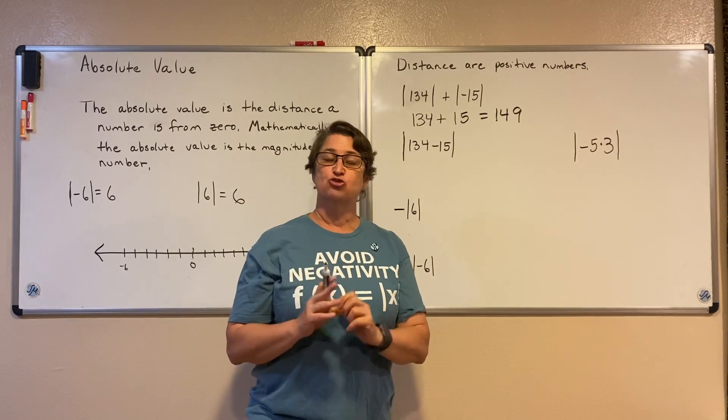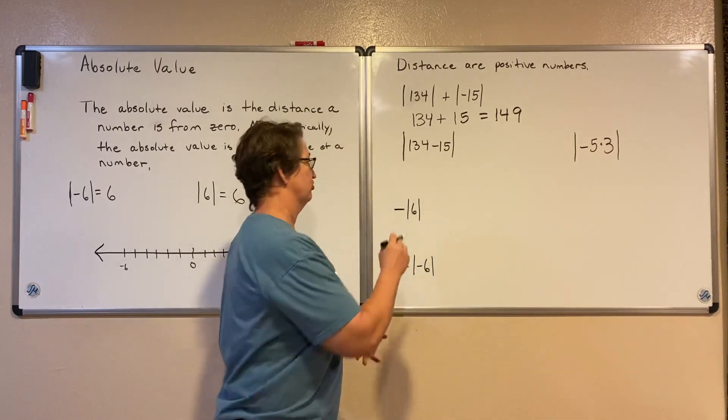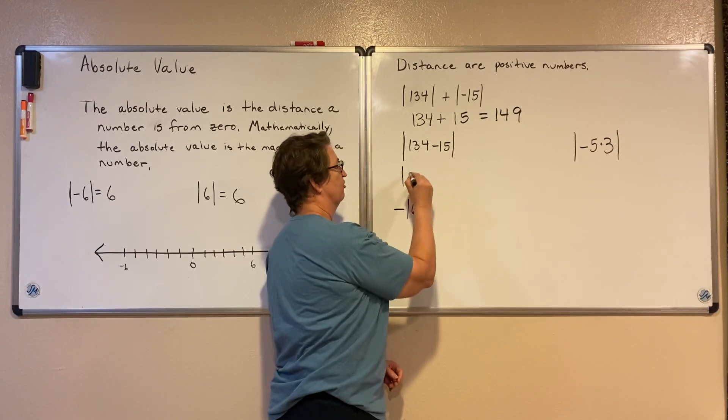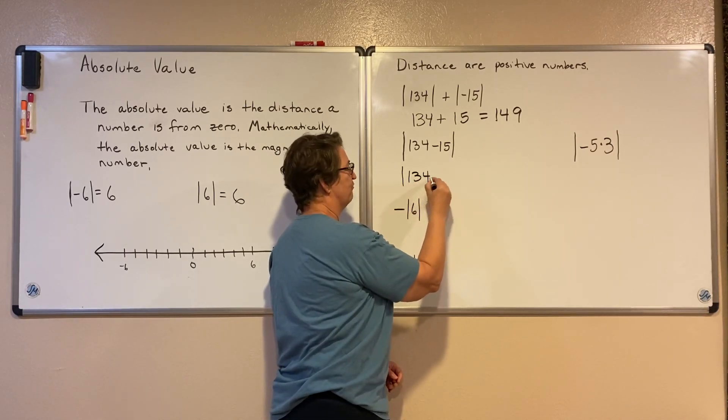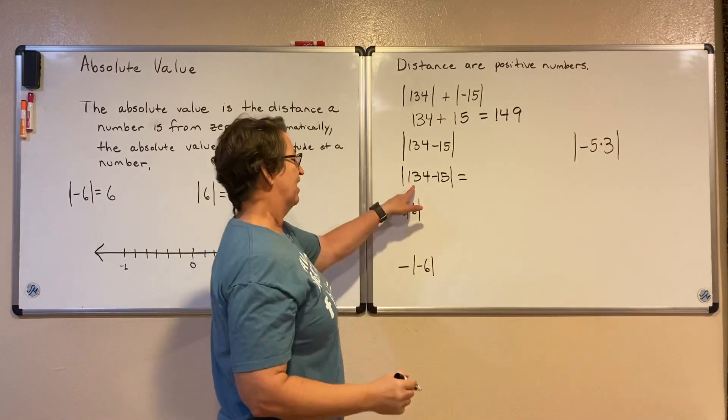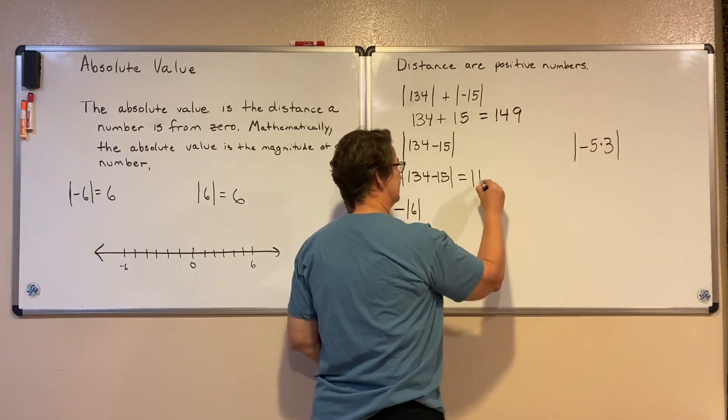And in order of operations, we have to take care of whatever is inside our grouping symbol first. So we're going to do this subtraction first. So 134 minus 15 brings us down to 124, minus another 5 is 119.